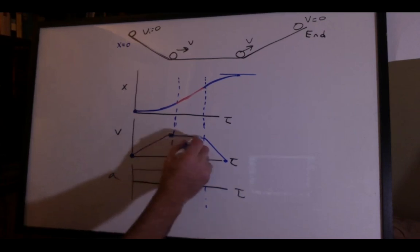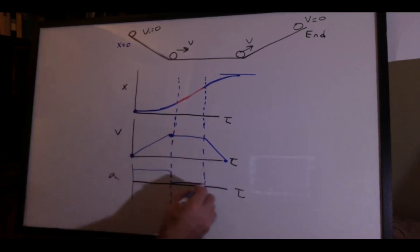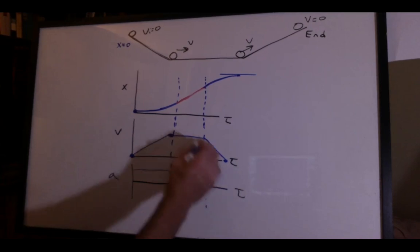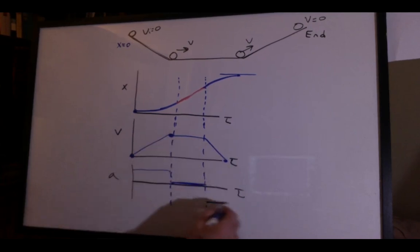I have zero slope, which would give me zero acceleration. And I have negative slope, which would give me negative acceleration.